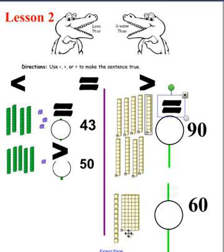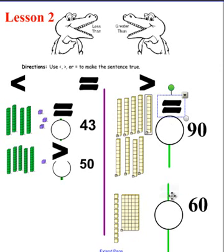And over here, we have a flat of ten, twenty, thirty, forty, fifty. And we have one, two, three, four, five, six, seven, eight, nine, ten. So fifty and ten is equal to sixty, and you should have had sixty there. Excellent job — hopefully yours matches ours.